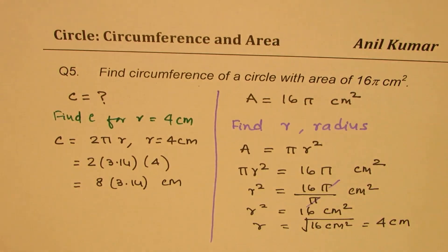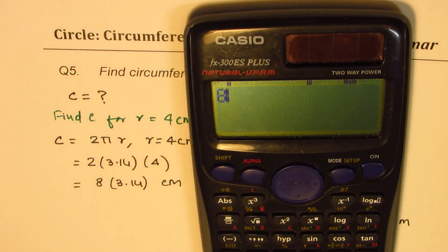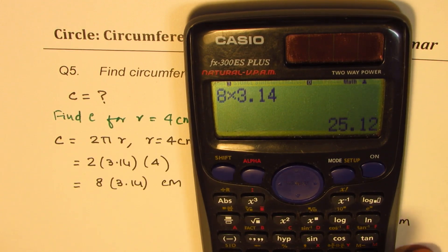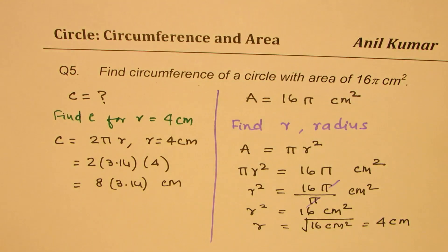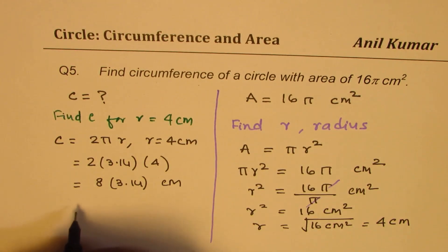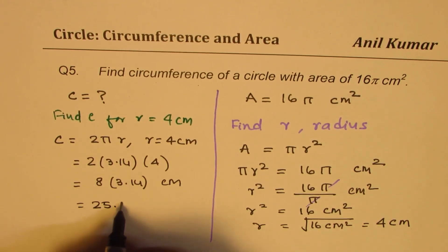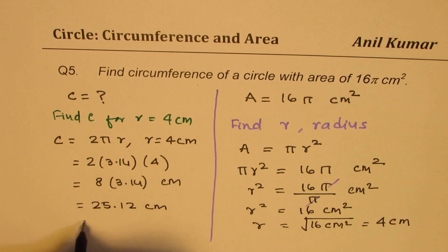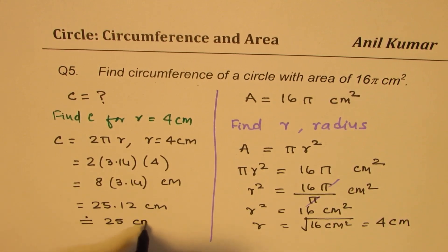Let's multiply and get our answer: 8 times 3.14 equals 25.12 in decimals. Sometimes you may have to round — we can round to 25 centimeters. That is how you are going to solve it.